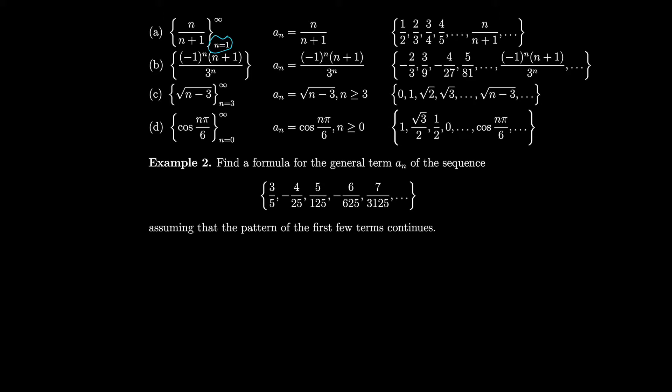So the first term is when you plug in 1: you get 1 over 1+1, which is 1/2. Then 2 over 2+1 is 2/3, and so on. All three representations — the curly brace notation, the defining formula, and writing out the terms — represent the same sequence.